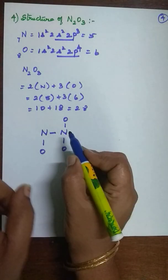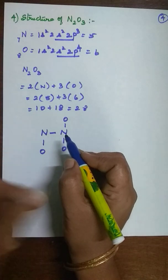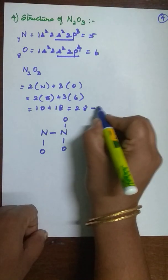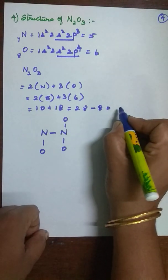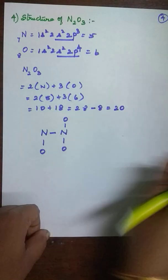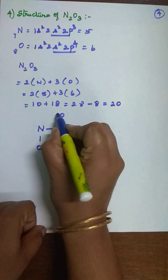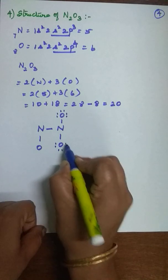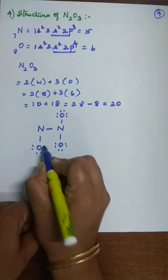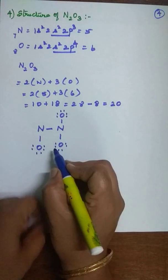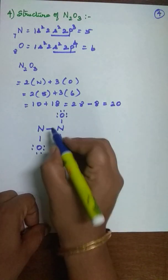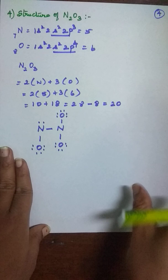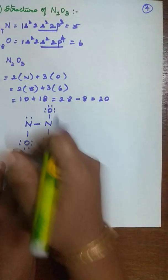Now count the electrons used in the single bonds: there are 4 single bonds, each containing 2 electrons, so 4×2=8 electrons used. Subtract 8 from 28, giving 20 remaining electrons to distribute. Fill the oxygen atoms first: placing 6 electrons on each of the three oxygens uses 18 electrons. The remaining 2 electrons go on the nitrogen atoms.